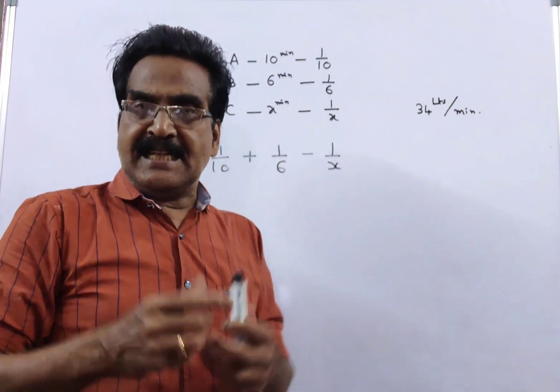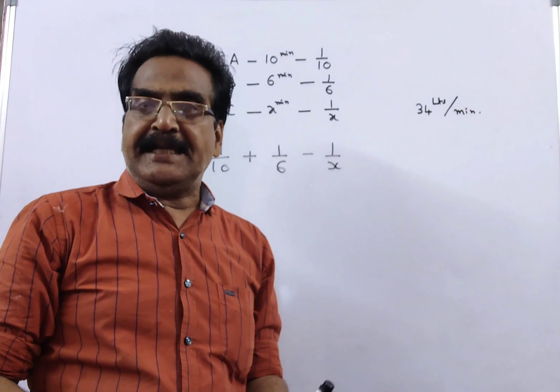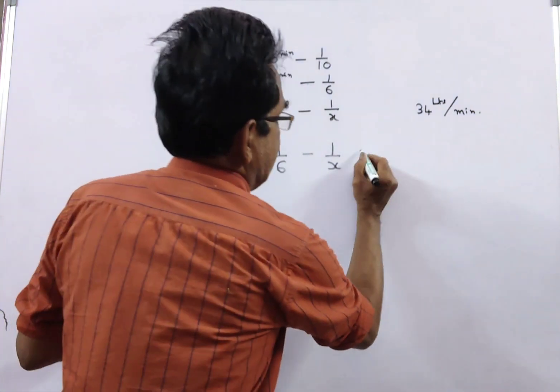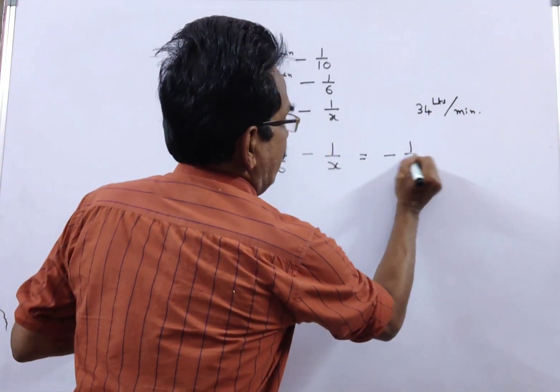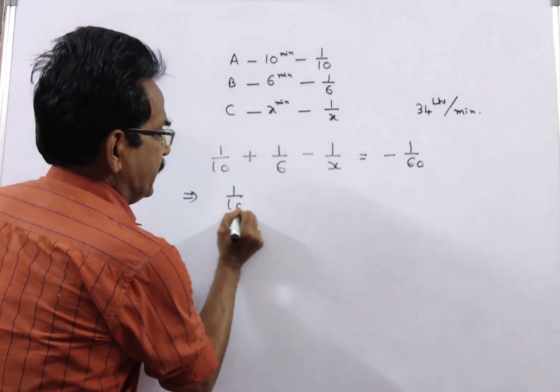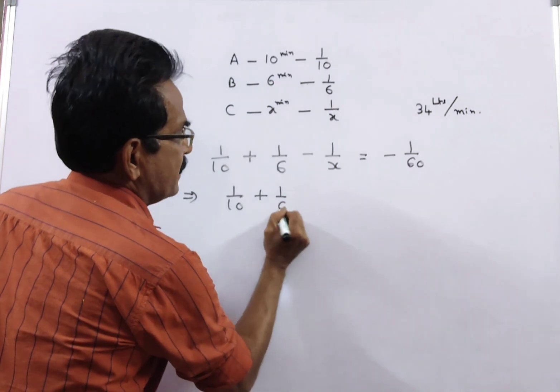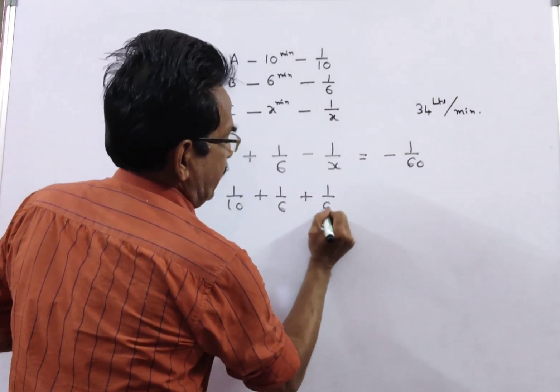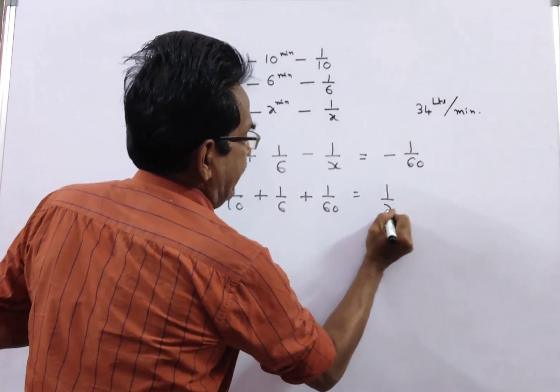If all the 3 pipes are opened, what is the net result? Well, a full tank is emptied in 60 minutes. That is equal to minus 1 by 60. It implies 1 by 10 plus 1 by 6 plus 1 by 60 is equal to 1 by X.